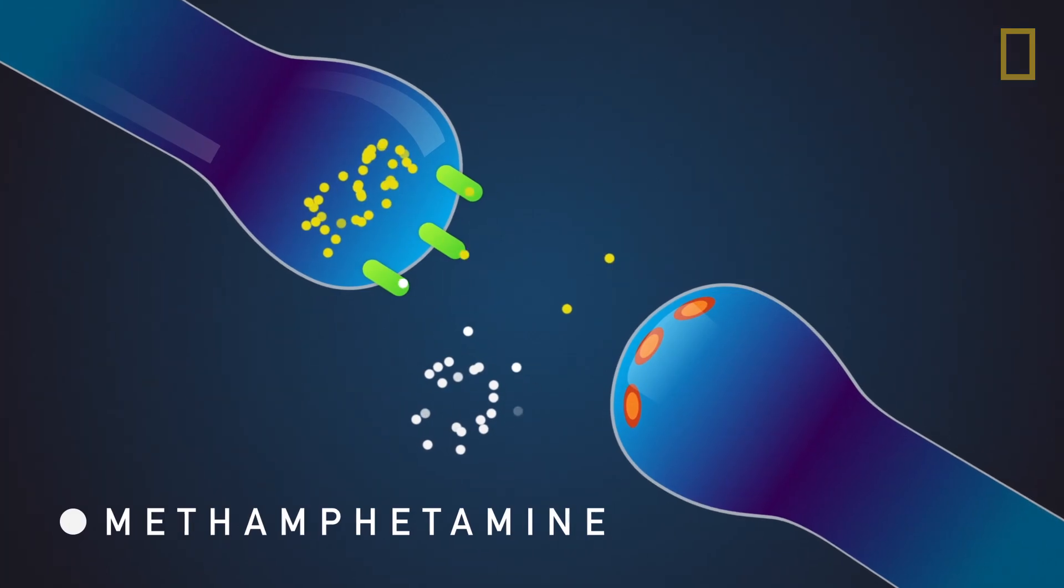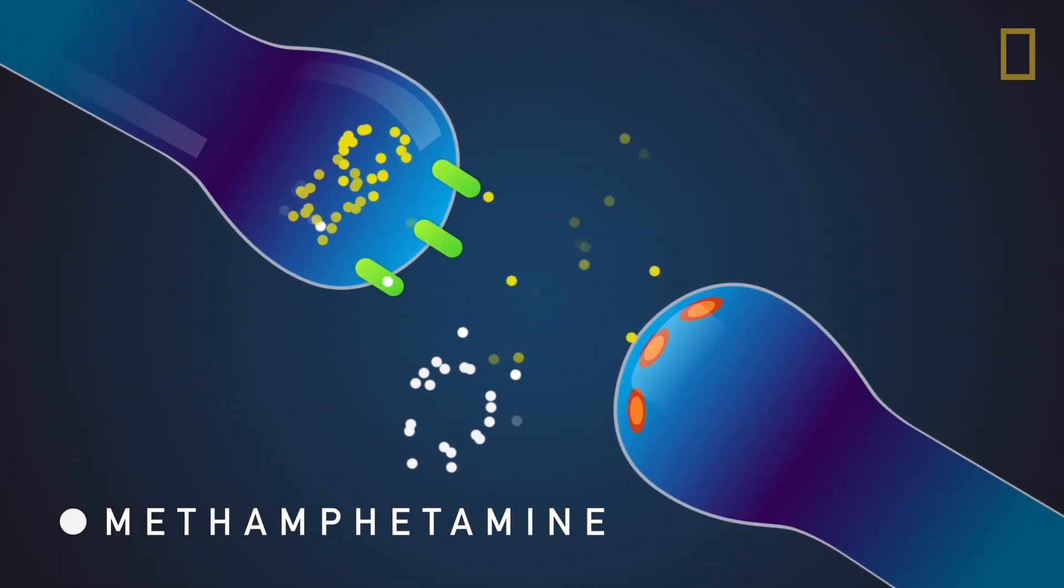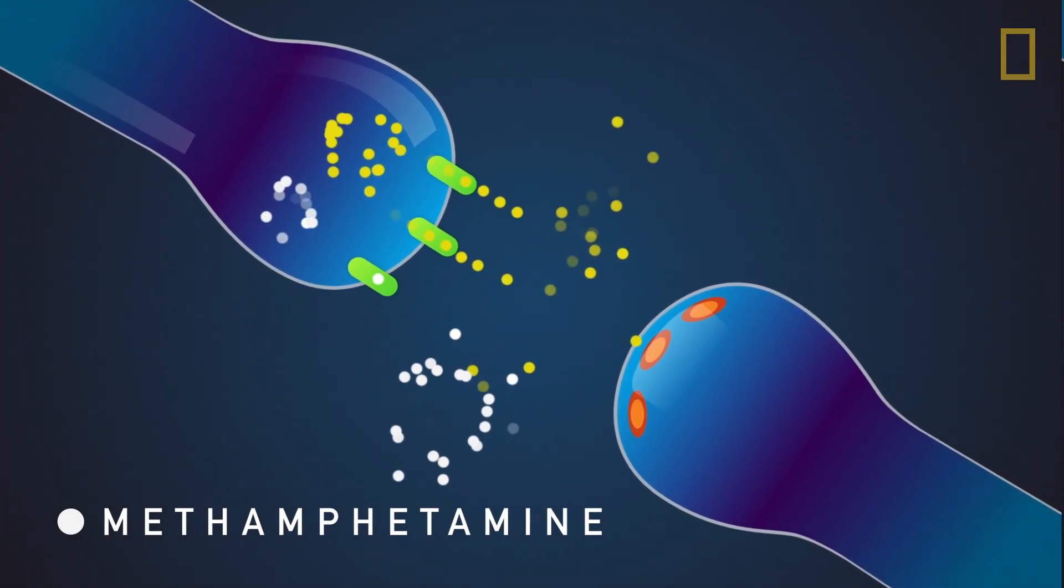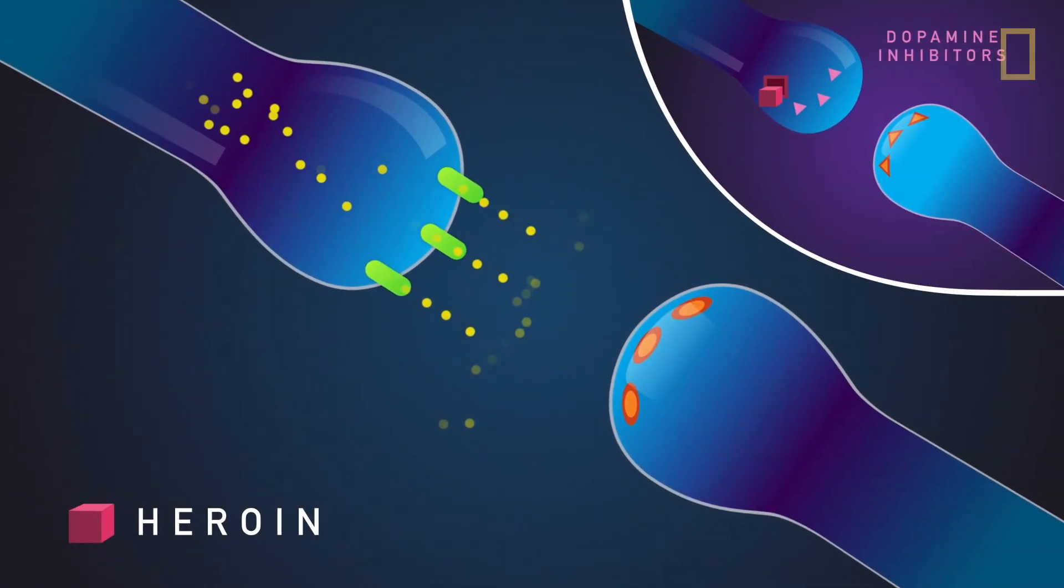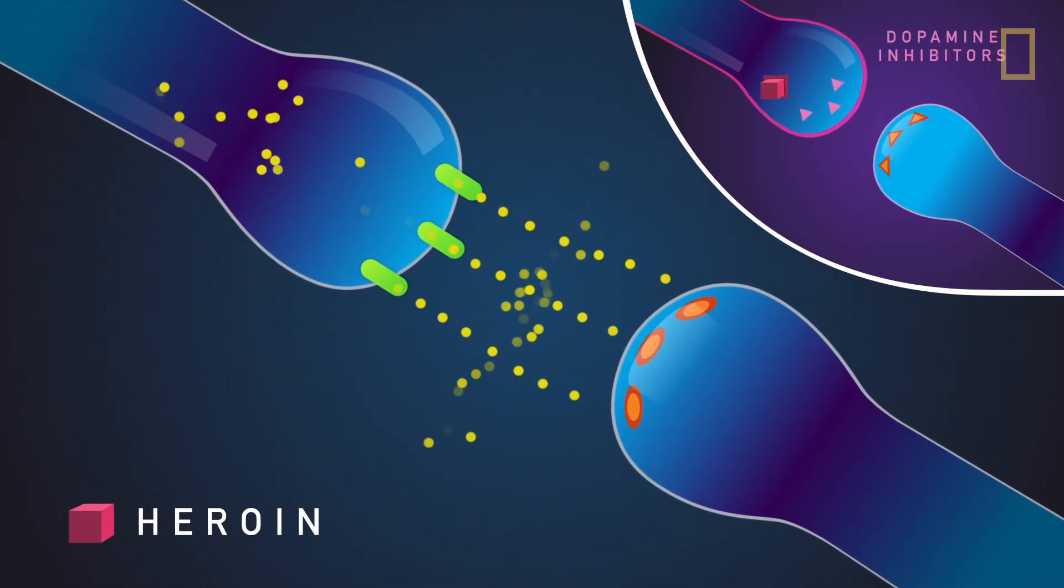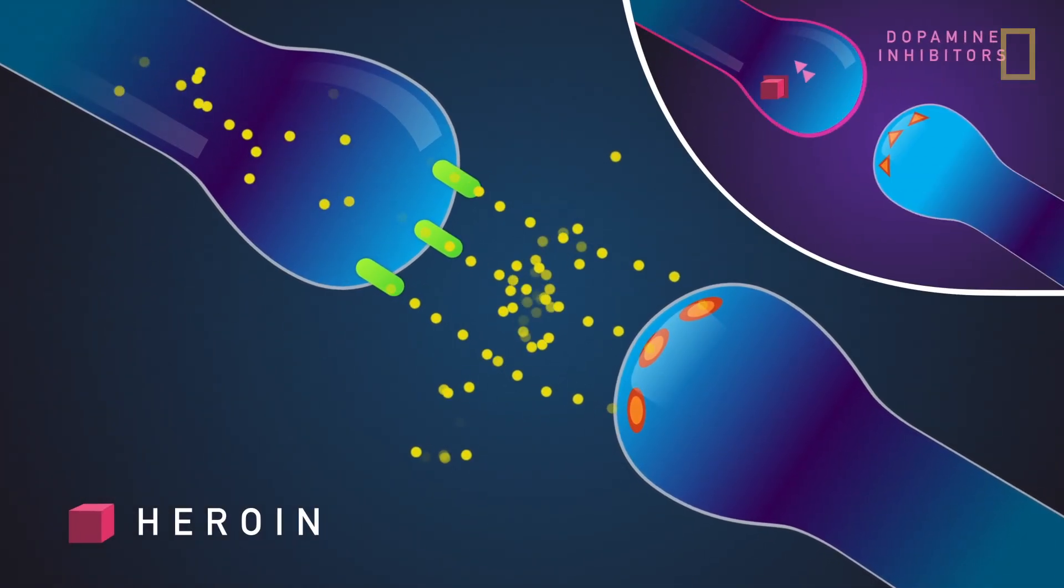Methamphetamine, on the other hand, floods the terminals of neurons, displacing dopamine into synapses instead. And heroin blocks dopamine inhibitors, causing synapses to flood with dopamine without restraint.